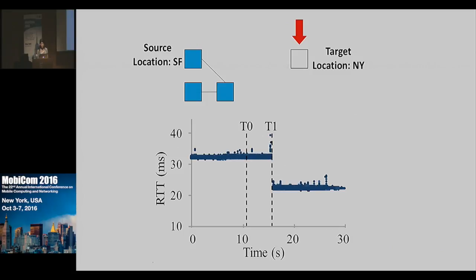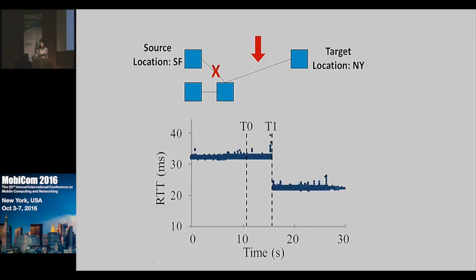The first thing we do is instantiate a compute at the target location, for example in New York. Once we have that compute, we can export the configuration and current state from the source to the target, essentially creating a copy. Finally, we use SDN to redirect traffic to the target and shut down the source. This is the generic recipe that can be applied to any component with a template.